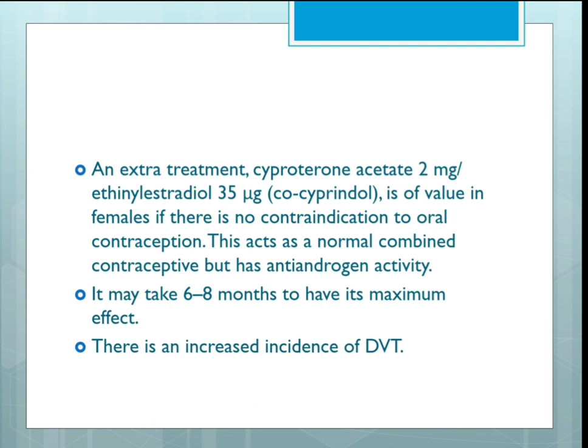An additional treatment is cyproterone acetate 2 mg with ethinylestradiol 35 micrograms (co-cyprindiol). This is of value in females if there is no contraindication to oral contraception. It acts as a combined contraceptive but also has anti-androgen activity. It may take six to eight months to have its maximum effect, and there is an increased incidence of DVT (deep vein thrombosis).